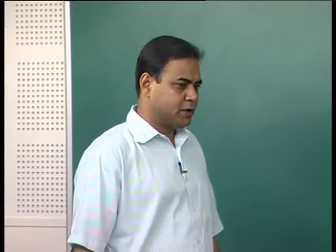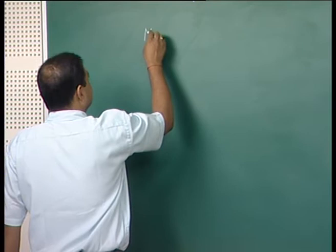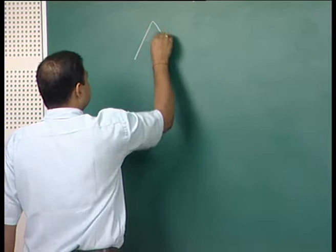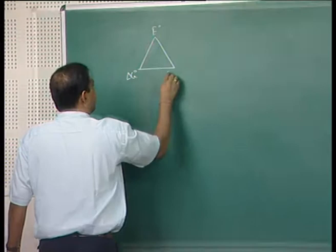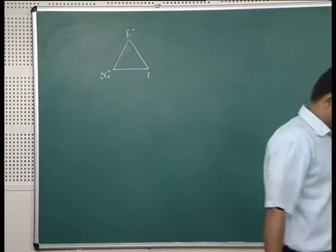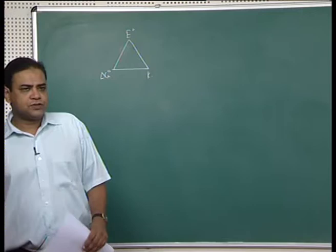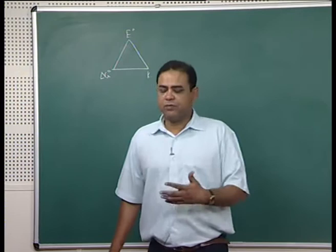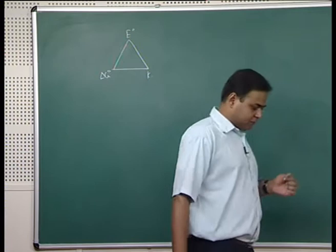Till now we have talked about thermodynamics of metal dissolution or corrosion. We have learnt mixed potential, free energy change, and this triangle where E⁰, ΔG⁰, and K are connected. These three parameters are connected to three equations, and from those equations we can tell whether metal dissolution is thermodynamically possible or not. We have also seen the origin of electrode potential or reduction potential.